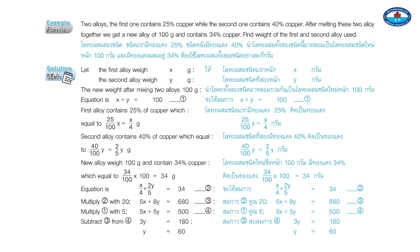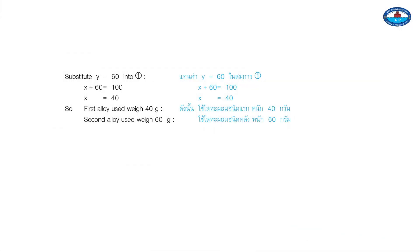The first alloy contributes 25% of x grams copper; the second contributes 40% of y grams copper. The new alloy has 34% of 100 grams = 34 grams copper, giving the equation 0.25x plus 0.40y equals 34. Multiplying: 5x plus 8y equals 680 (Equation A); and from x plus y equals 100 multiplied by 5: 5x plus 5y equals 500 (Equation B). Subtracting: 3y equals 180, y equals 60. Substituting y equals 60 into x plus 60 equals 100 gives x equals 40. So the first alloy weighs 40 grams and the second weighs 60 grams.